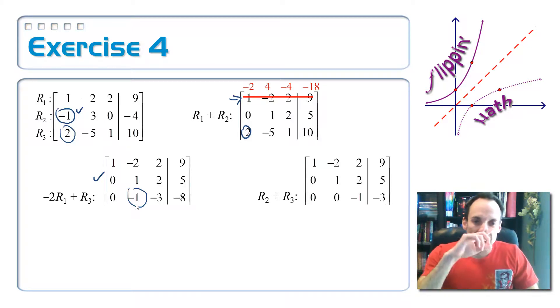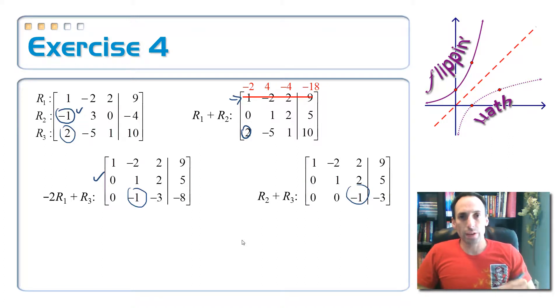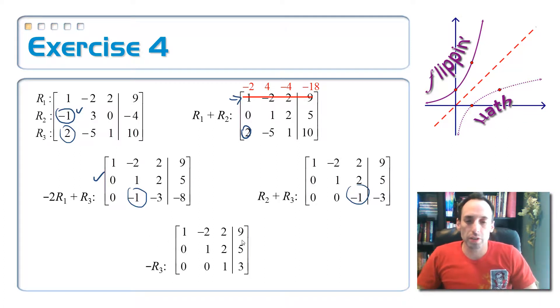Okay? And then finally, I need to get rid of the negative sign in front of this negative 1. And I can do that by just taking negative row 3 to replace row 3. So, top row will stay the same. Middle row will stay the same. The last one will just change signs on both of them. And now I have just put this thing into triangular form.